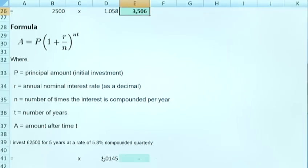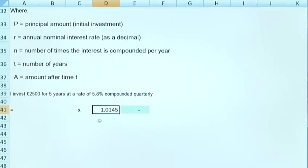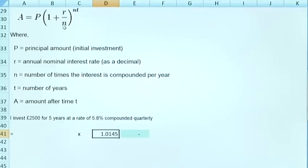If we look down here, this section of the formula is the 1 plus R over N section. So in this section of the formula we're looking at the 1 plus R over N which is simply 1 plus the 0.058 divided by 4.